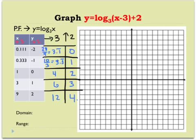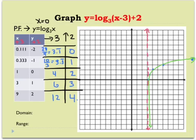Plotting the new points: (3.1 repeating, 0) — just past 3; (3.3 repeating, 1); (4, 2); (6, 3); and (12, 4) is off the graph. The original function had an asymptote of x equals 0, but by shifting the graph right 3, the asymptote also shifted to x equals 3. It's important to draw in and label the asymptote. We can see the function will get very close to the asymptote but not pass it, and the general shape of the graph starts to appear.